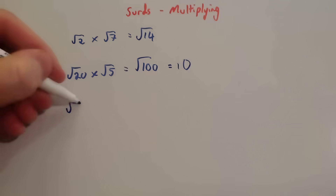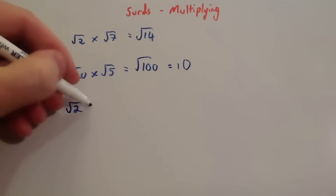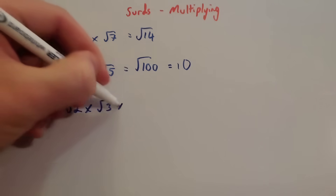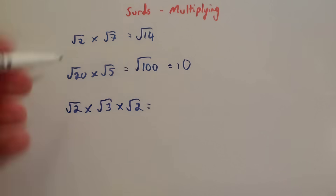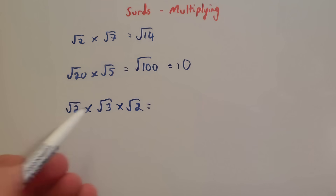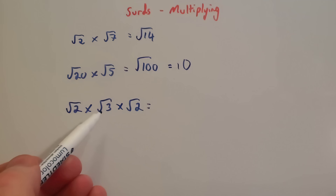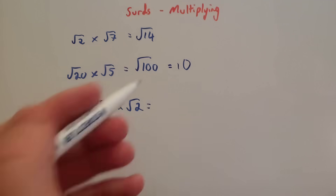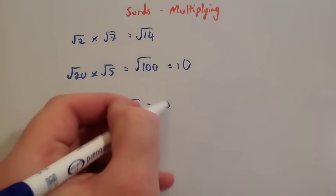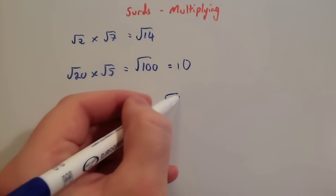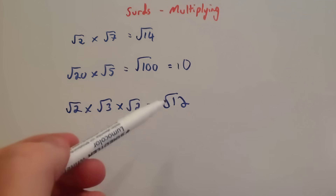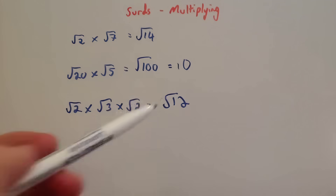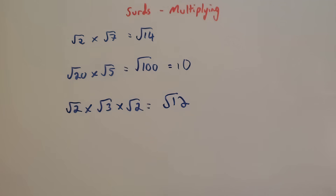Also, if you had something like root 2 times root 3 times root 2, you could just multiply them one at a time. Root 2 times root 3 is root 6, and then root 6 times root 2 would be root 12. This one can actually be simplified, but I'll show you how to do that later in the video.